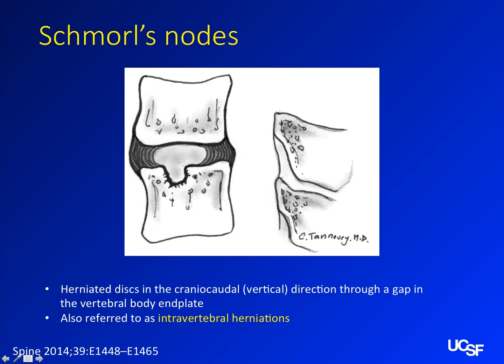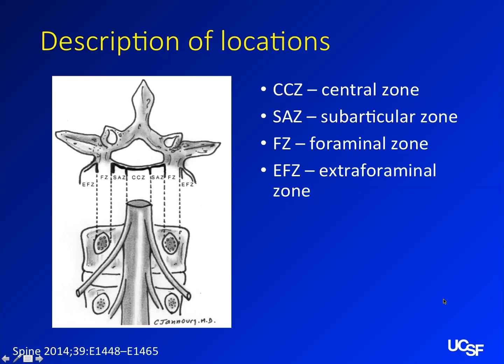These locations are defined in the paper as descriptors for where the disc is going. There's the central zone, and what we most commonly call the lateral recess — technically the subarticular zone. Then there's the foraminal zone and the extra-foraminal zone. These descriptors are useful because a disc protrusion out in the foraminal zone is different from one in the central zone — the symptoms and the surgical approach may be different.